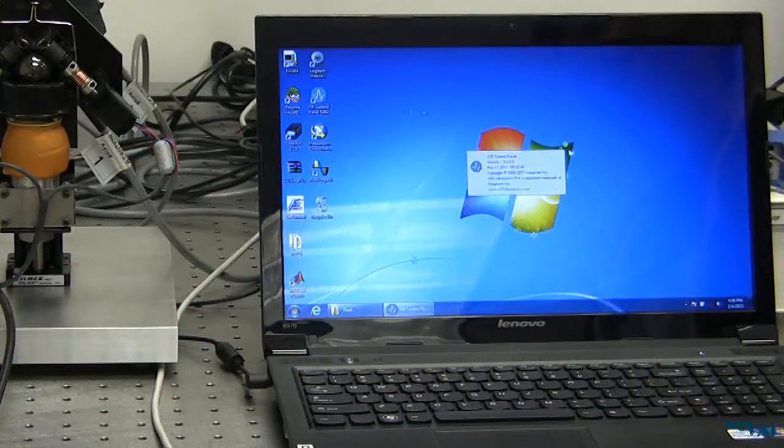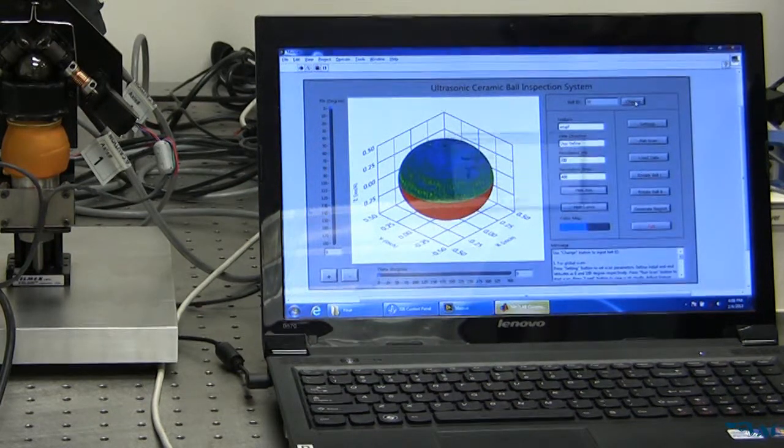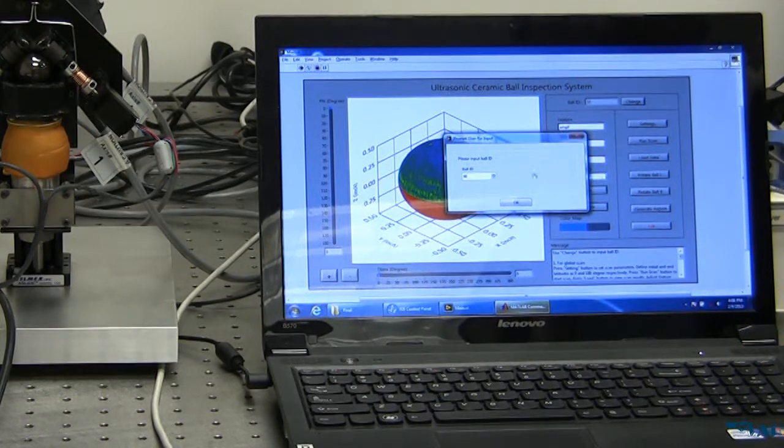To inspect the ball, double click the SWAM icon on the desktop to start the main SWAM program. Input the ball ID number in the pop-up window.